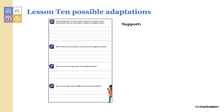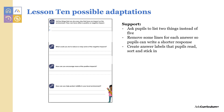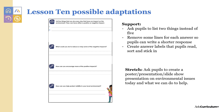To support pupils in lesson ten, you could ask them to list two things instead of five, remove some lines for each answer so pupils can write a shorter response, or create answer labels that pupils read, sort, and stick in. To stretch pupils, ask them to create a poster, presentation, or slideshow on environmental issues today and what we can do to help.